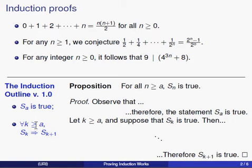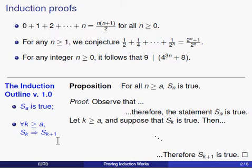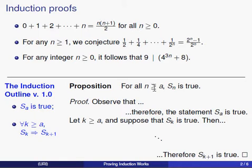Then you prove that for any k past that value a, if S(k) is true, then S(k+1) should be true as well. Just verifying those things in your proof is supposed to be enough to show that for all n greater than or equal to a, S(n) should be true.